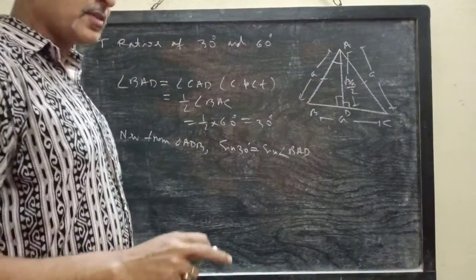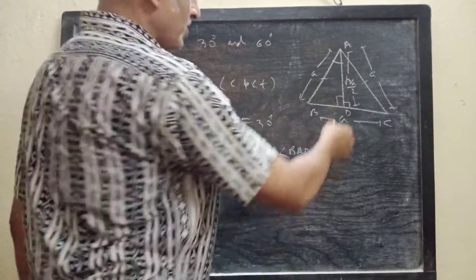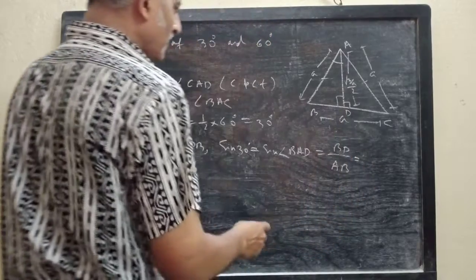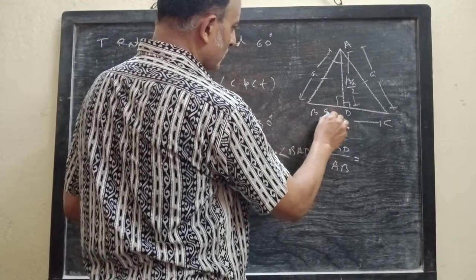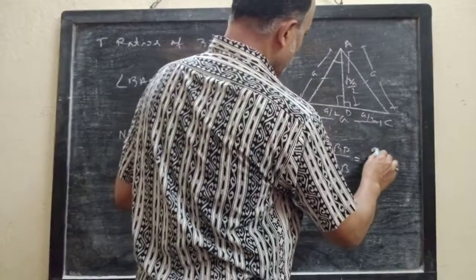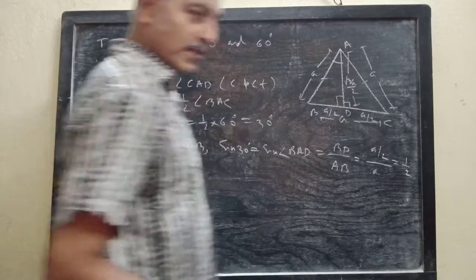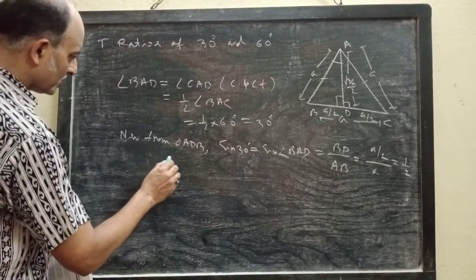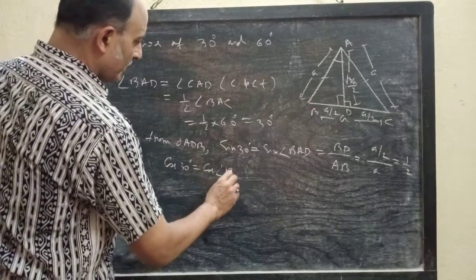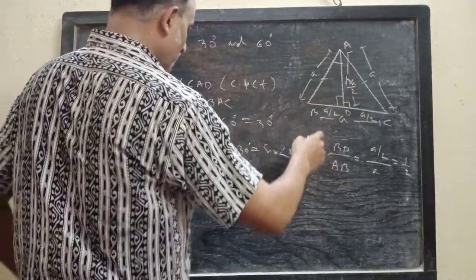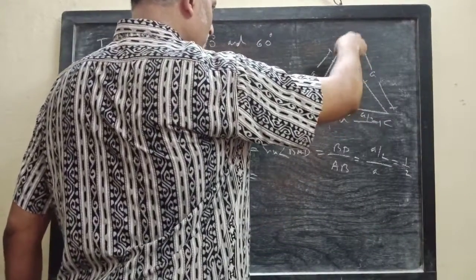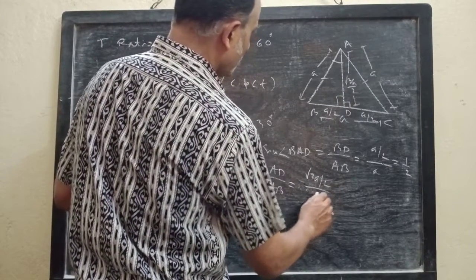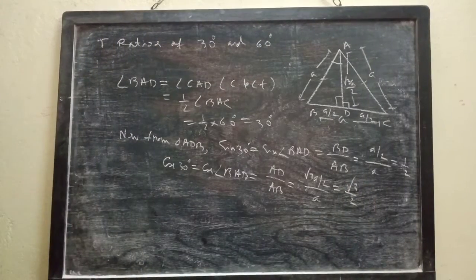BD = A/2, AB = A, so sin 30° = (A/2)/A = 1/2. This matches the value in our table. For cos 30°, we get AD/AB = (√3·A/2)/A = √3/2. And tan 30° = BD/AD = (A/2)/(√3·A/2) = 1/√3. In a similar way, you can find cosec 30°, sec 30°, and cot 30°. We have now calculated all 6 ratios for 30°.